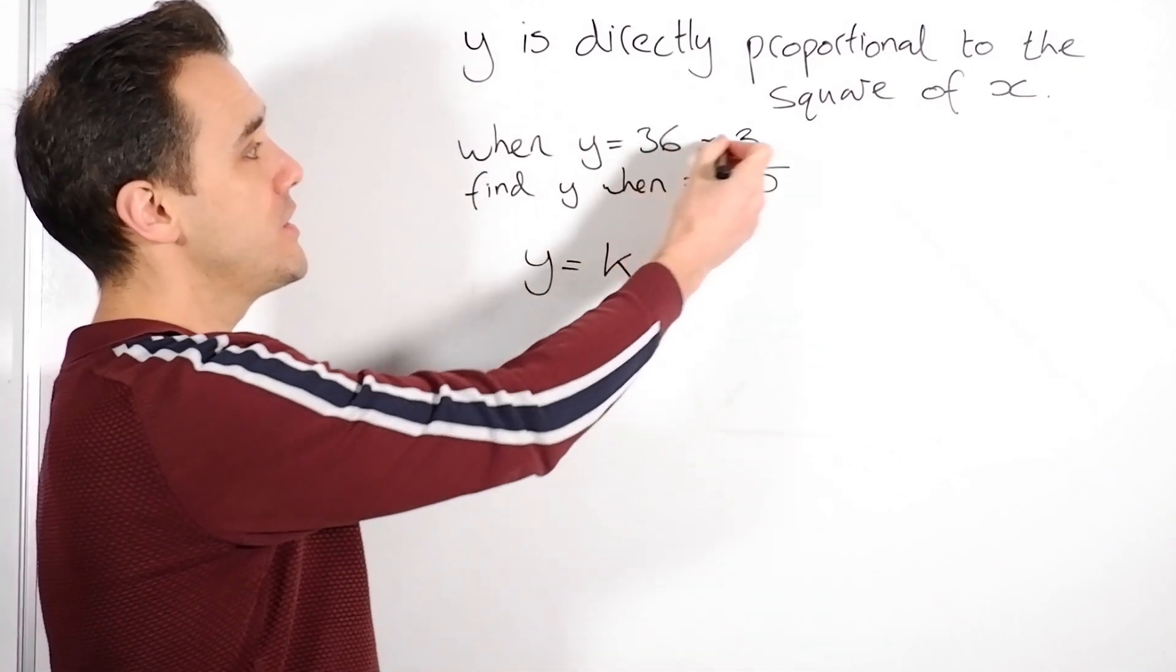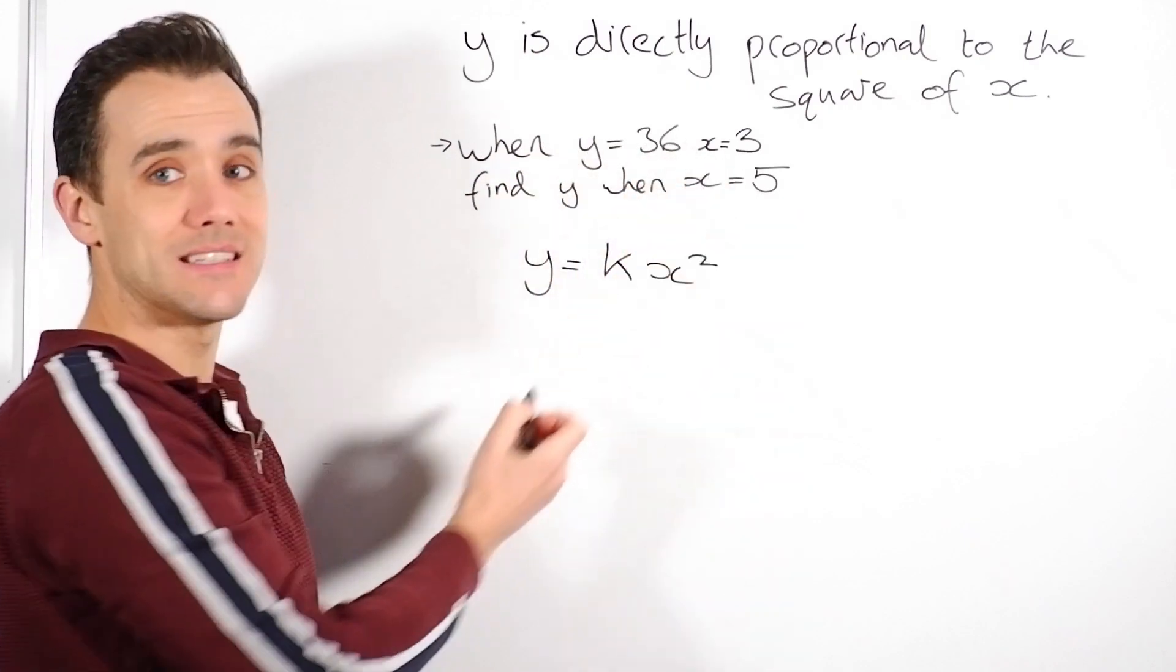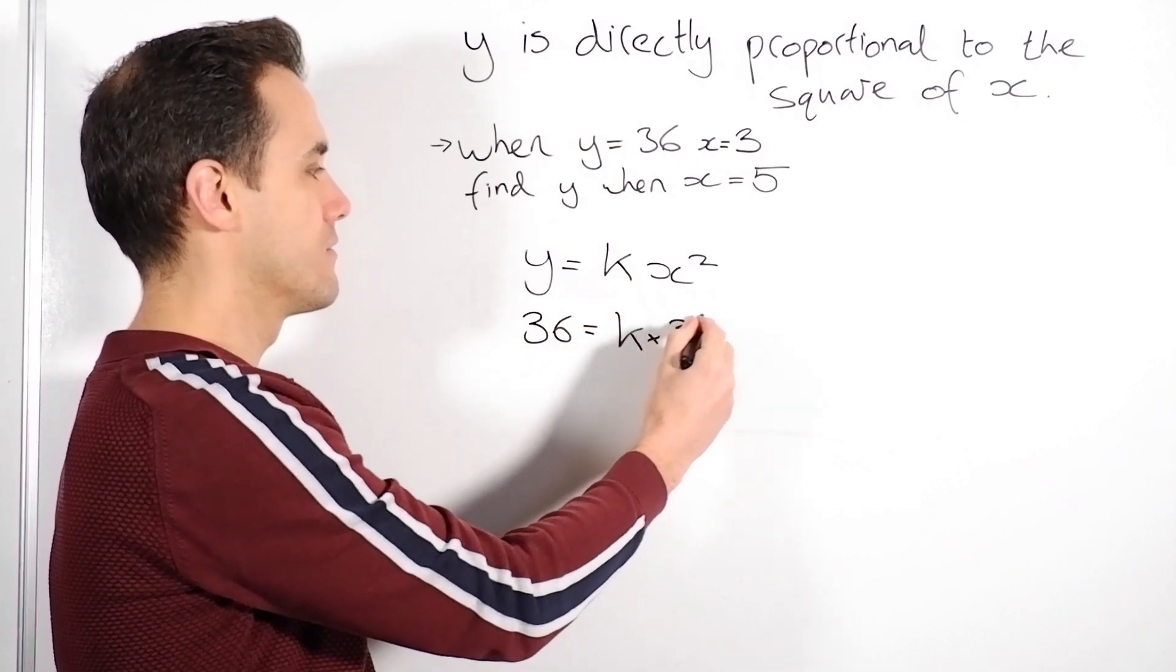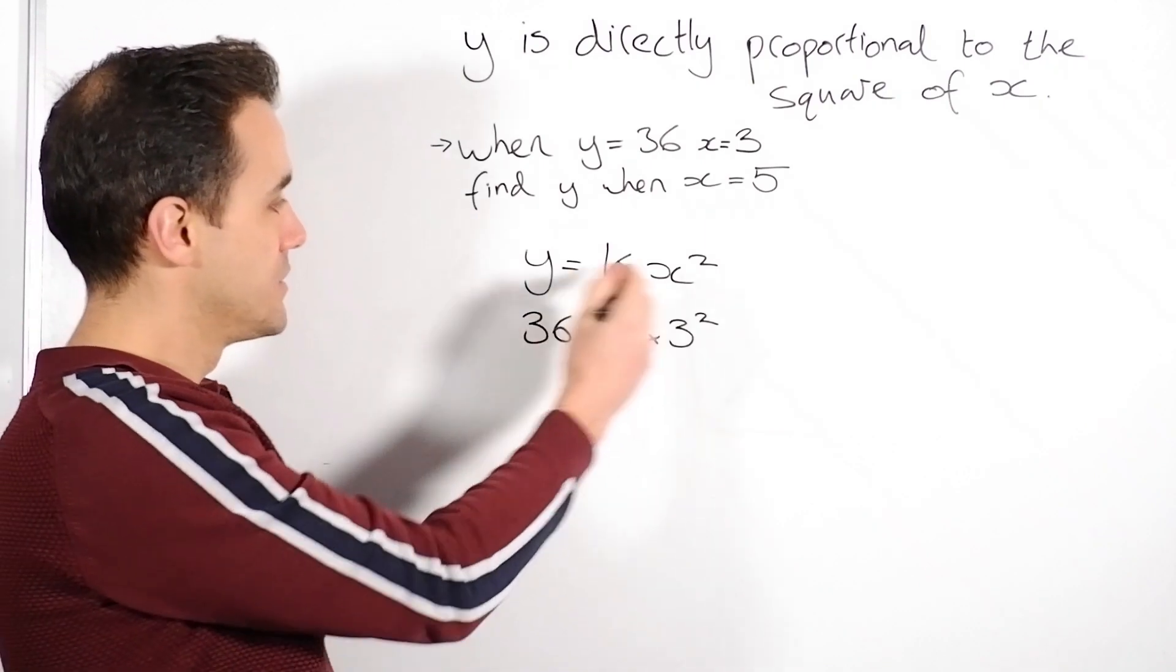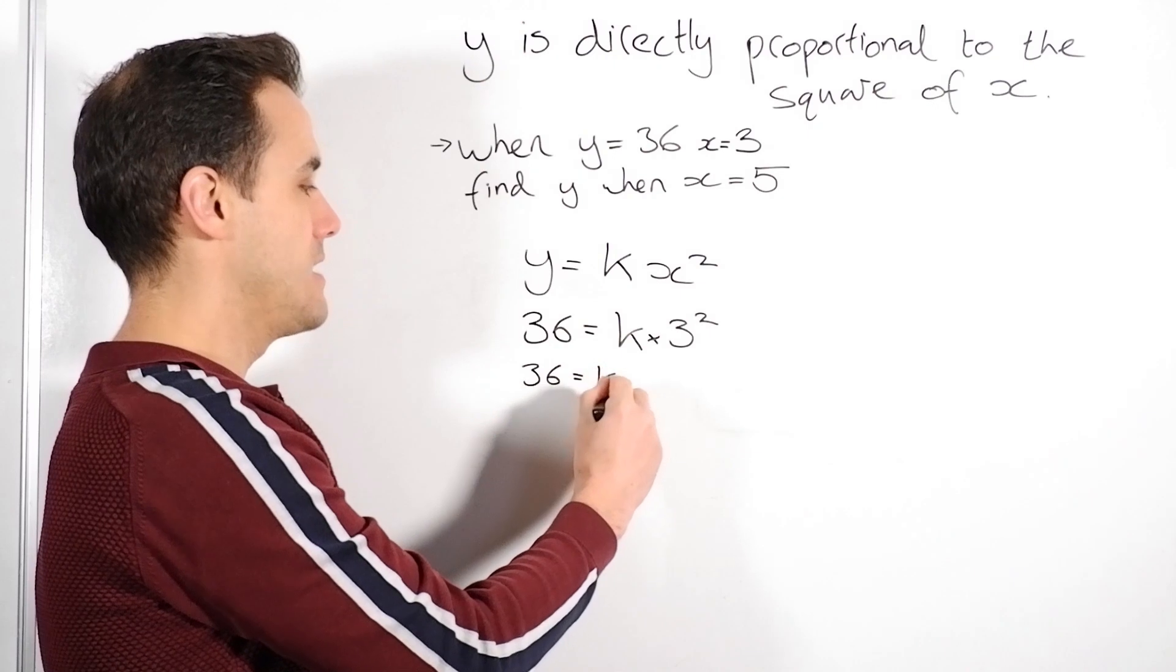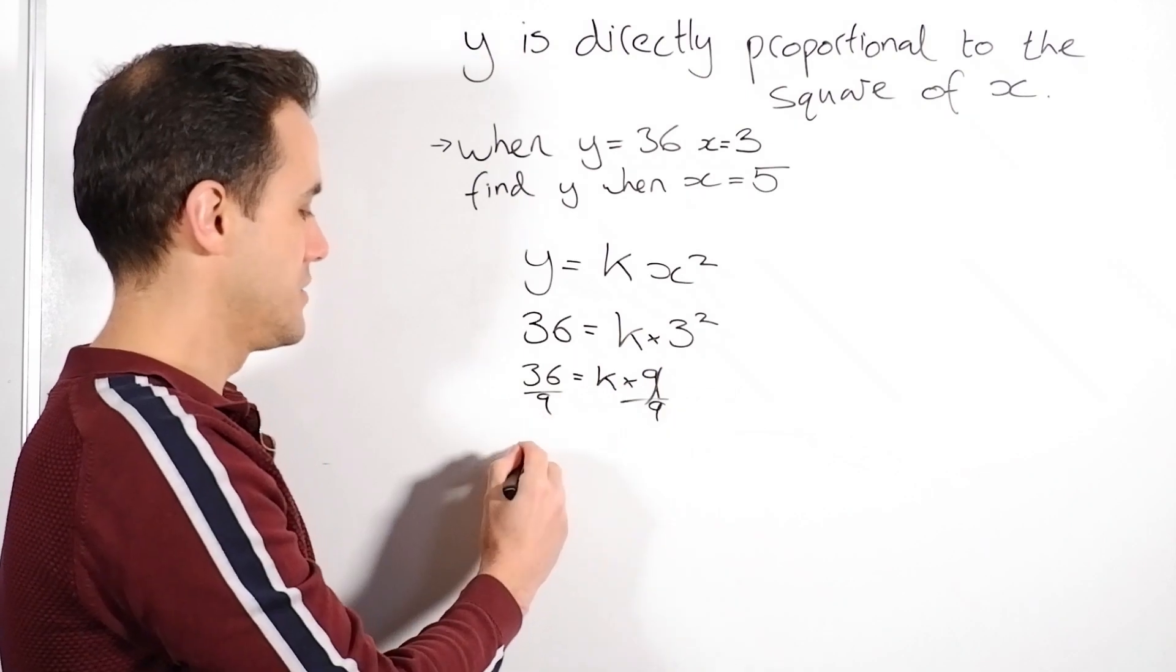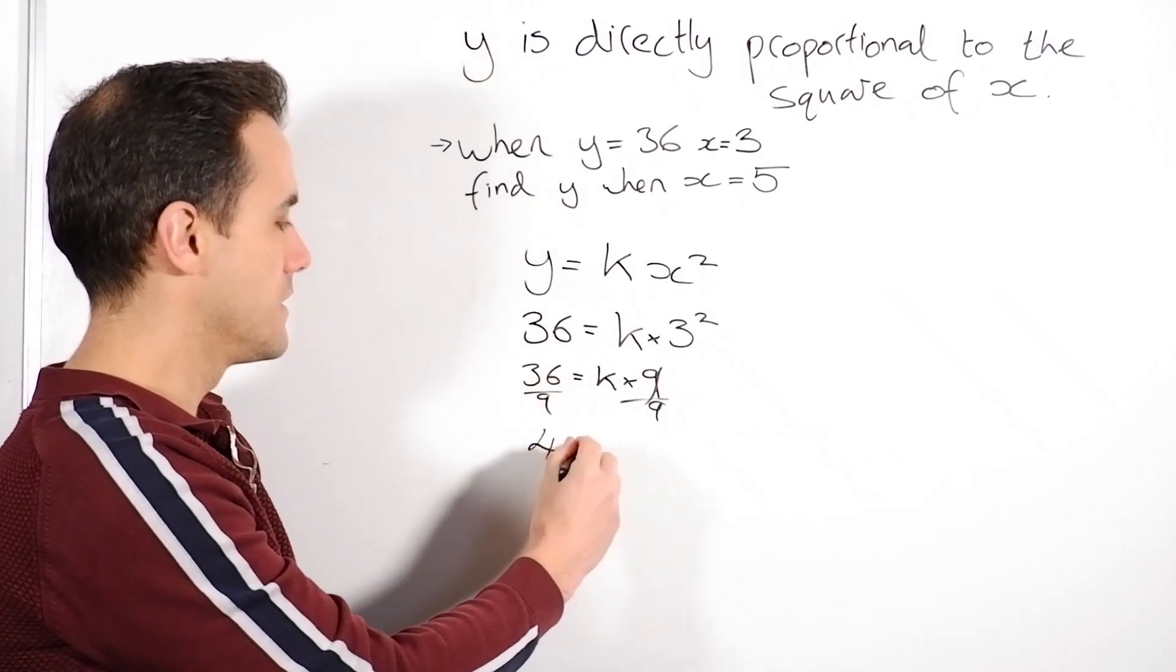Step two, we put in the numbers that it's given us in this bit. So it says when y is 36, x is 3. So we just put them in. We put 36 instead of our y equals our k times by 3 squared. Now we just need to solve this to find what k is. So we find that 36 is k times by 9. We divide both sides by 9. That gets rid of that. So we find that 36 divided by 9 is 4. So 4 equals k.